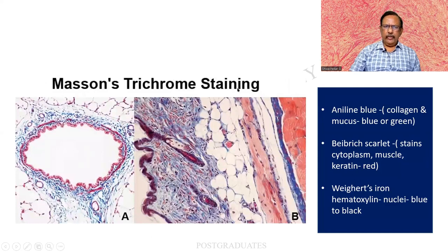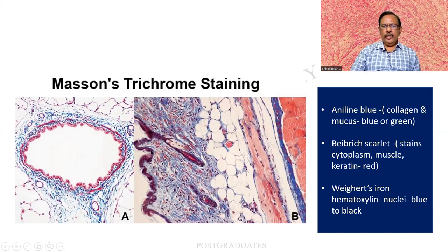Looking at a Masson's Trichrome slide, there is endothelium here, and then there is connective tissue — I am able to see a blue color. In a blood vessel or in skin, there will also be muscle that can be seen. So the muscle here is taking up a red color, and all the connective tissue is taking up a blue color. Aniline blue stains the collagen, Biebrich scarlet stains the muscle, and iron haematoxylin is for the nuclei of all cells.